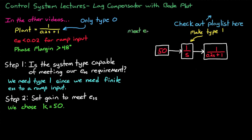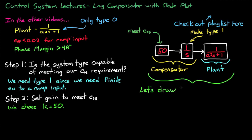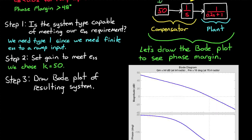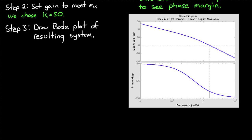After our first two steps, our controller looks like 50 over s. If we were to implement this controller and close the loop, we would meet our steady state error requirement. But at this point, we've done nothing to meet our phase margin requirement. So in step 3, we drew the Bode plot of our open loop system with our currently designed compensator. This is the open loop Bode plot of 50 divided by 0.2s squared plus s, and we find that we still only have 18 degrees of phase margin, which isn't enough to meet our requirement.